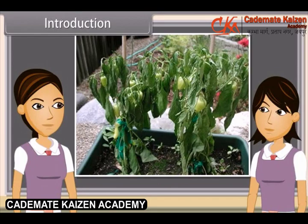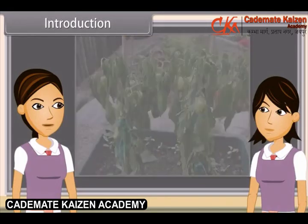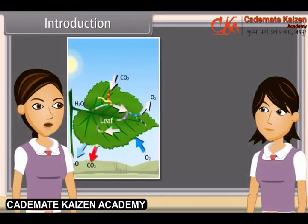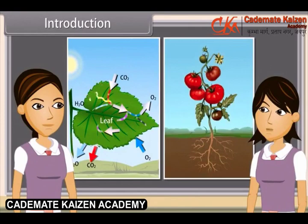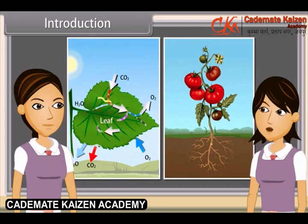We have also learned that the leaves for photosynthesis need water. Likewise, the food produced in the leaves has to be transported to other parts of the plant, including the stem, the roots, flowers and fruits. All this transportation is the function of conducting tissues.